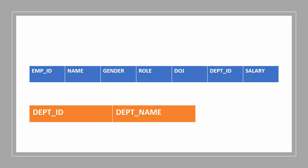The first table we have is employees, which has employee ID, name, gender, role or designation, date of joining, department ID, and salary as columns. The second table we have is department, which has department ID and department name as columns.